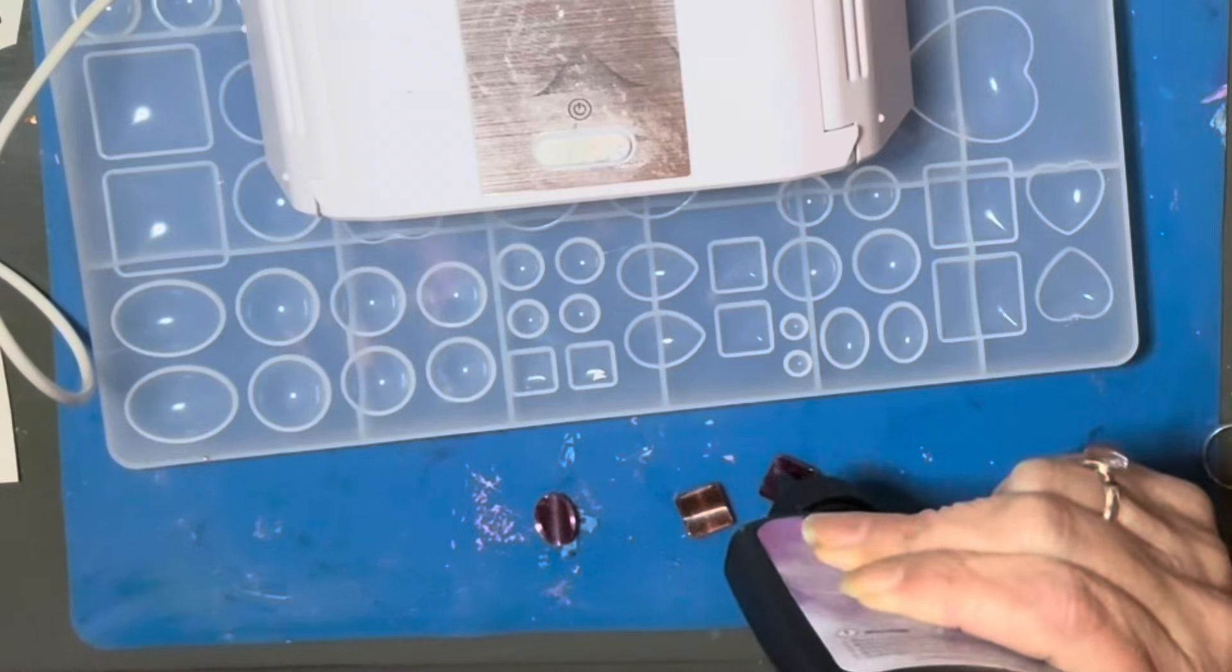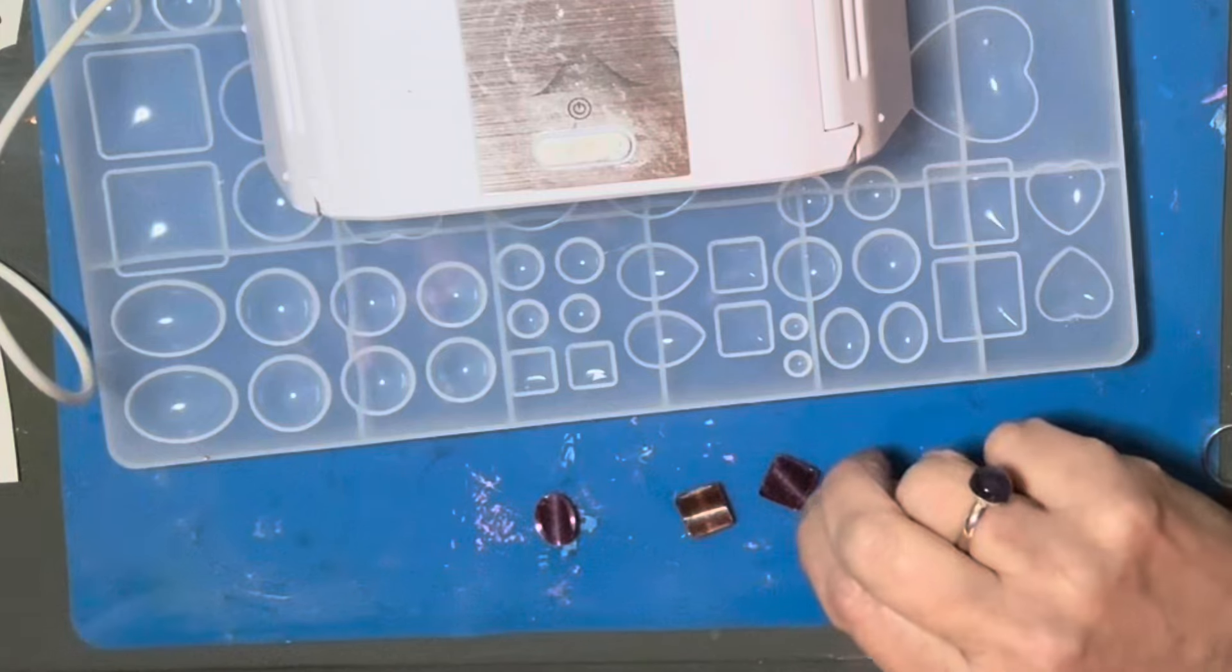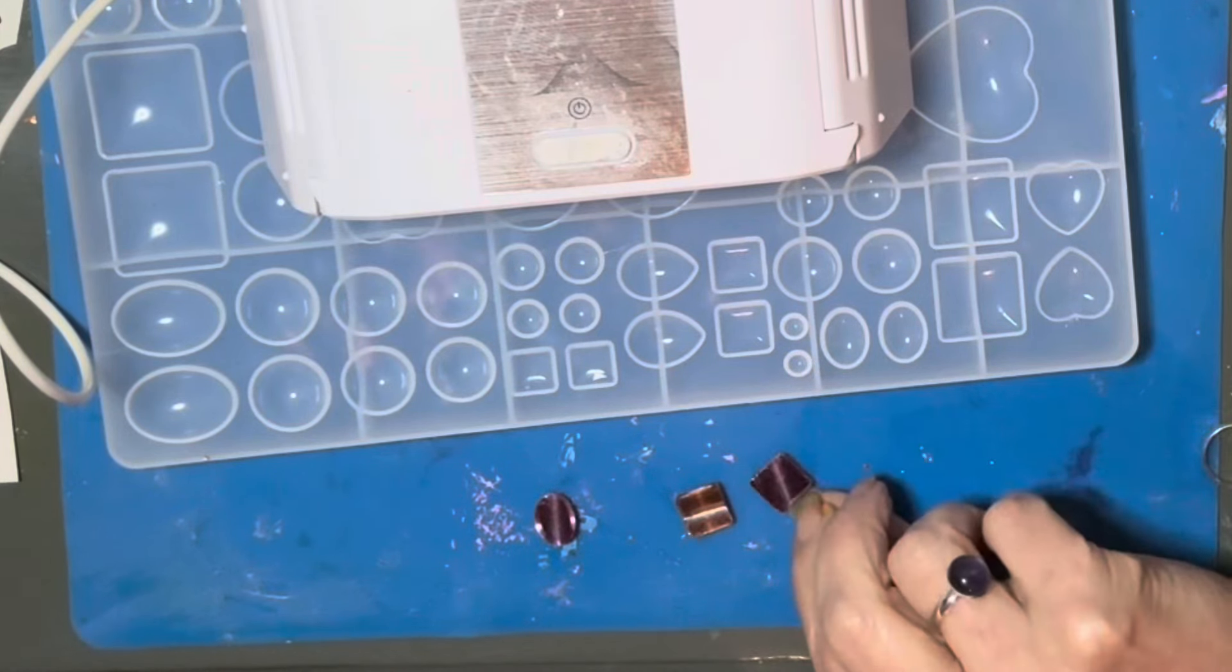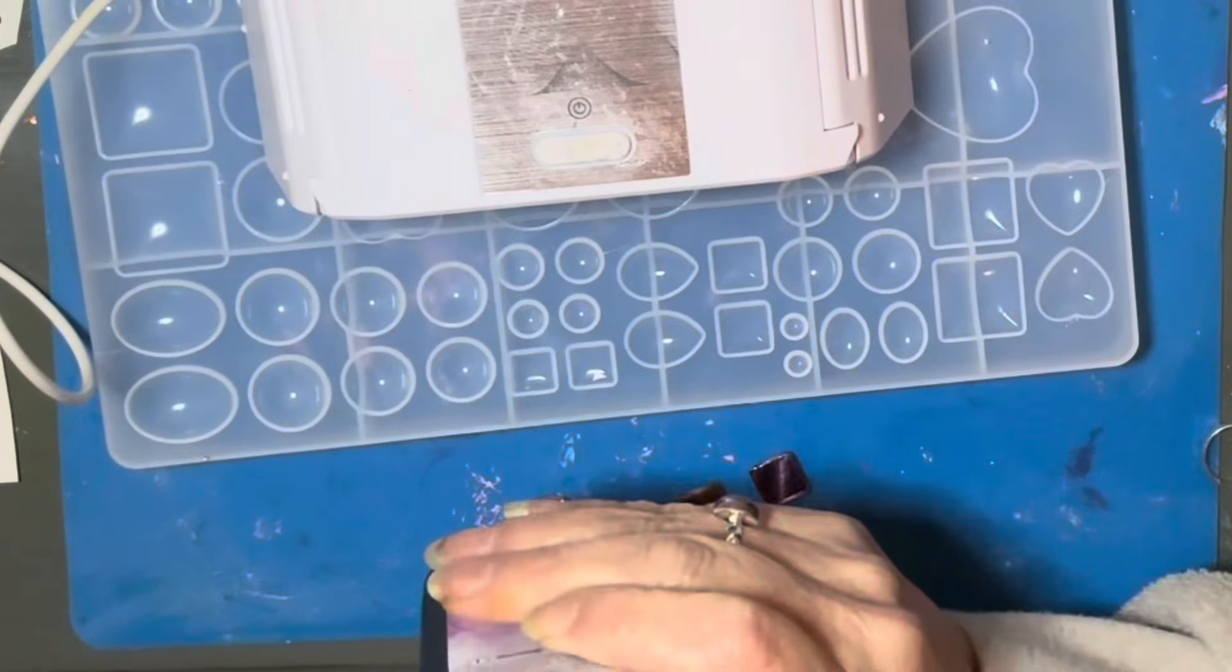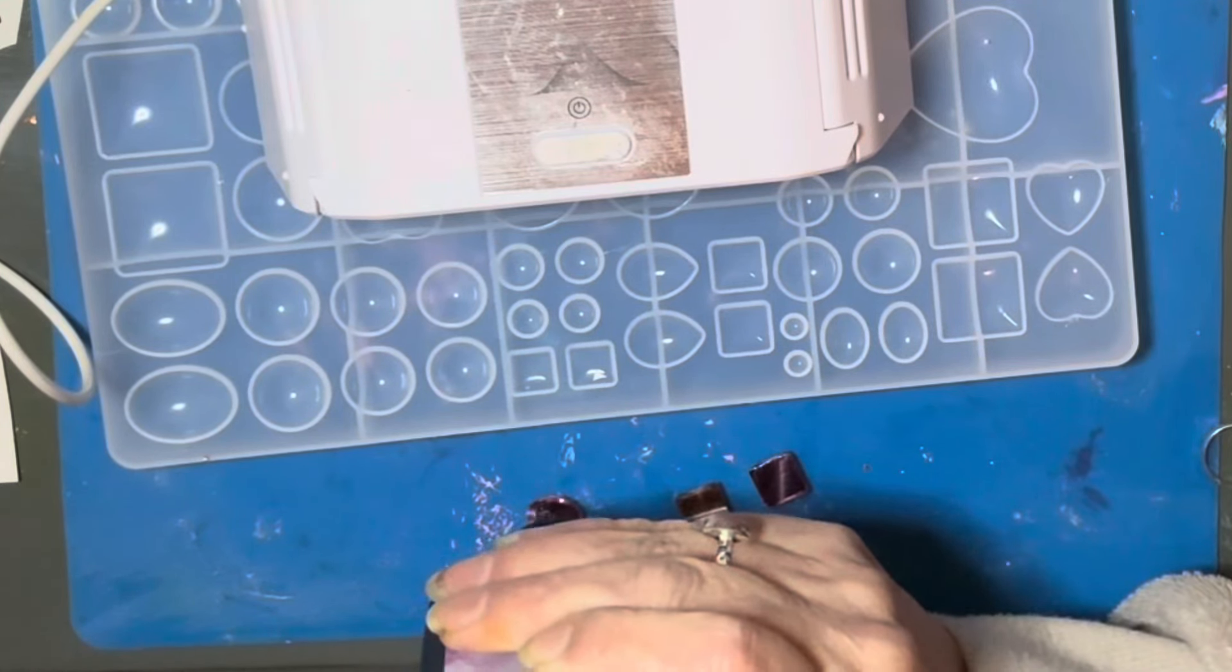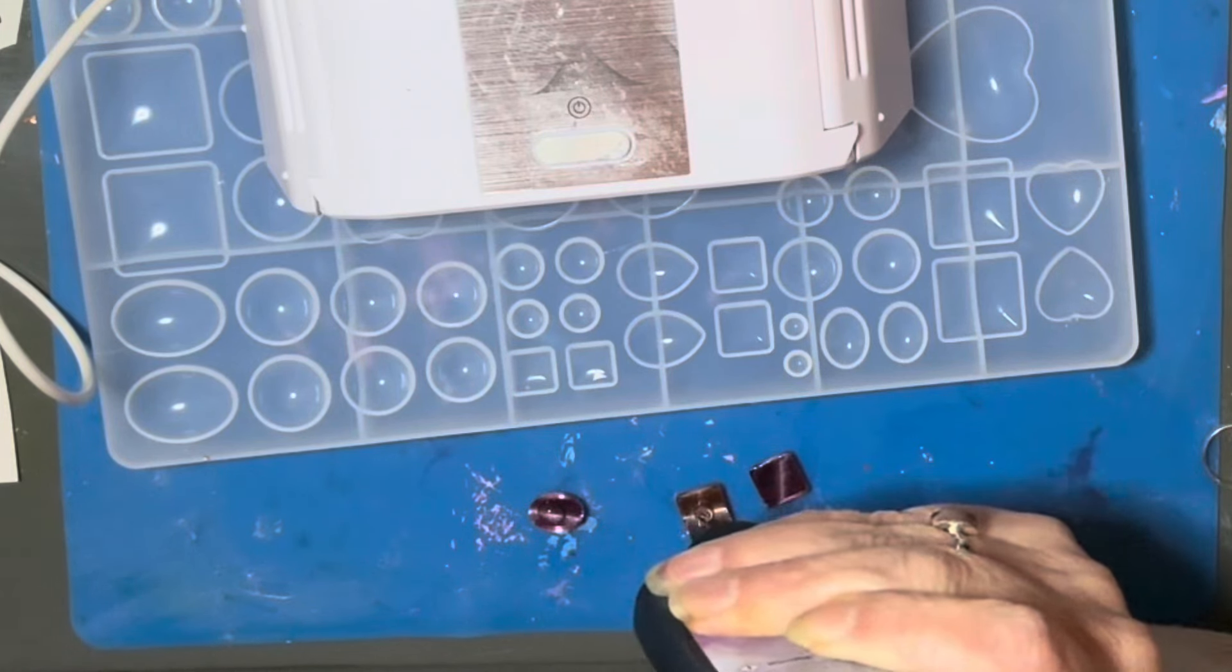Anyway I decided to go over the back of these with some UV resin just to make sure that the nail polish didn't come off. Now you'll notice I made a mistake here. What am I doing wrong? Can you guess?